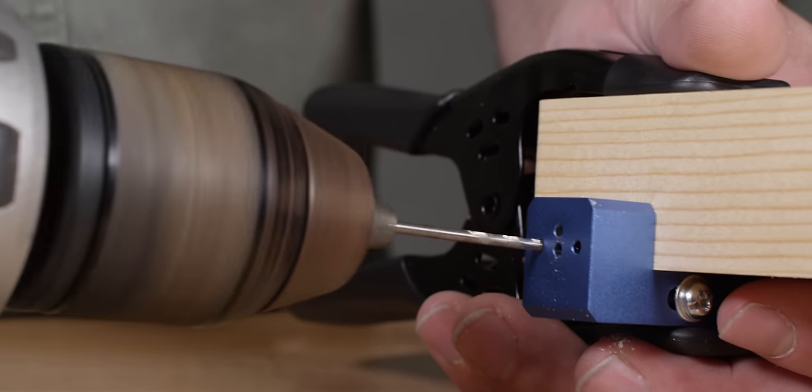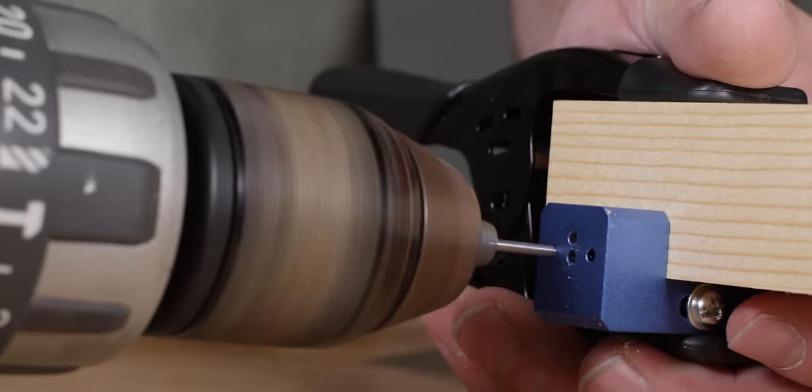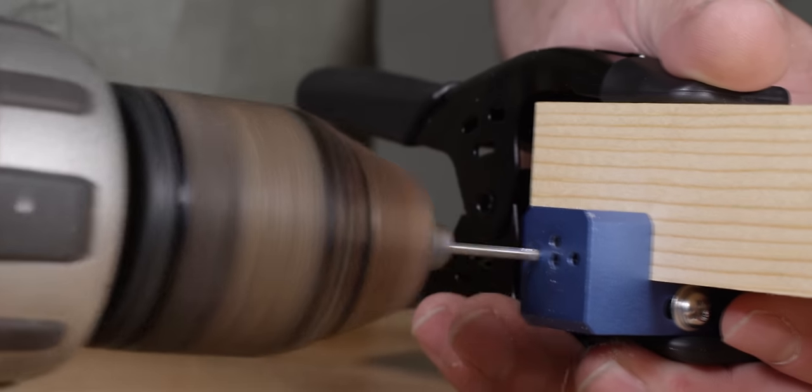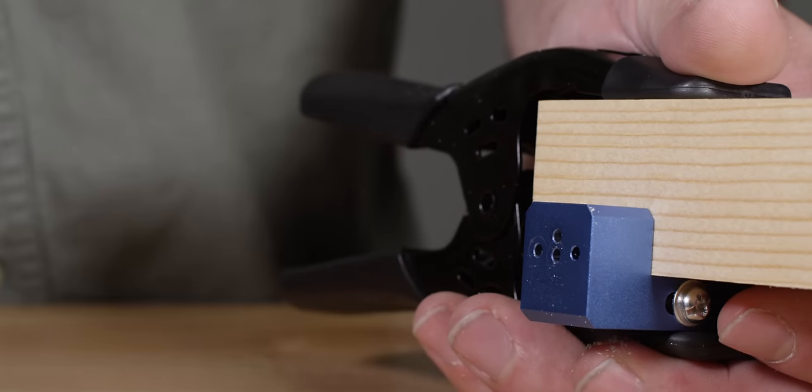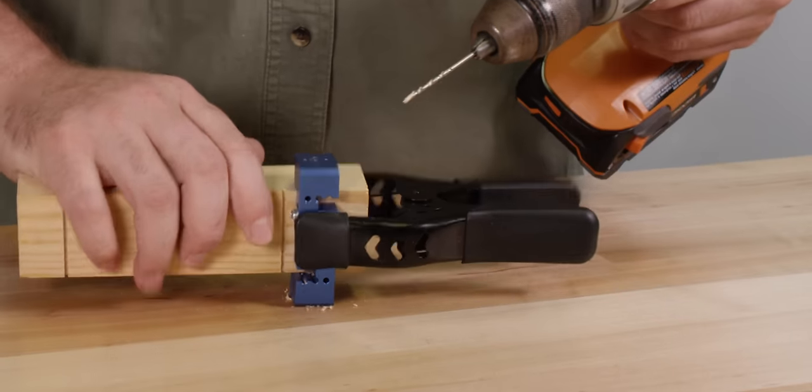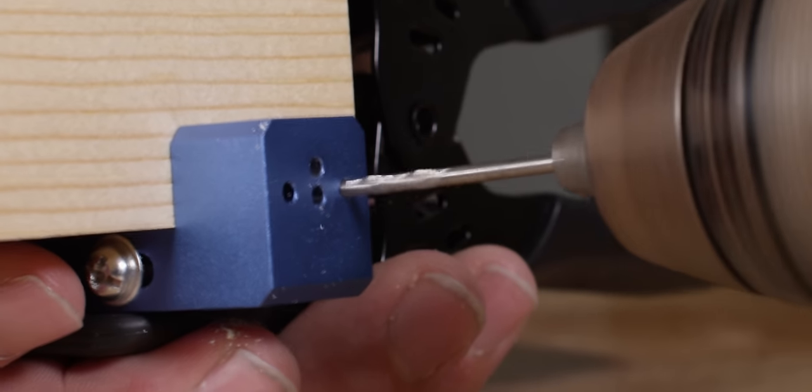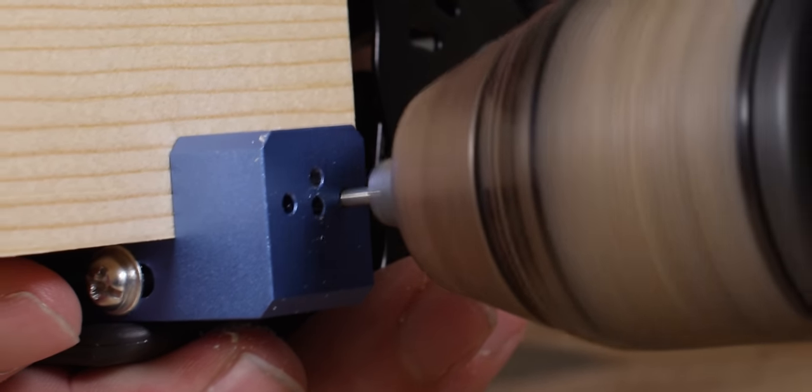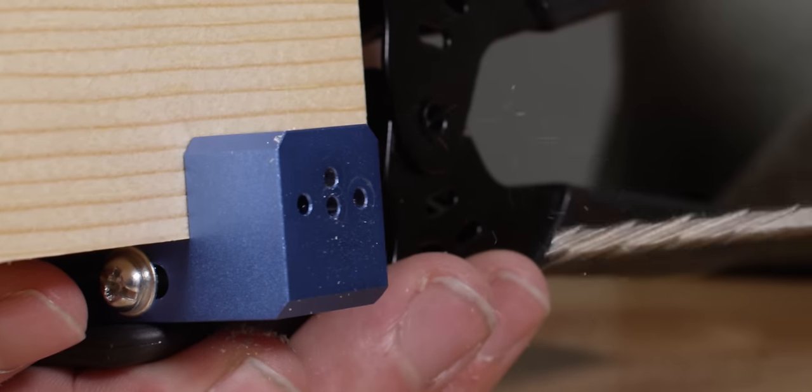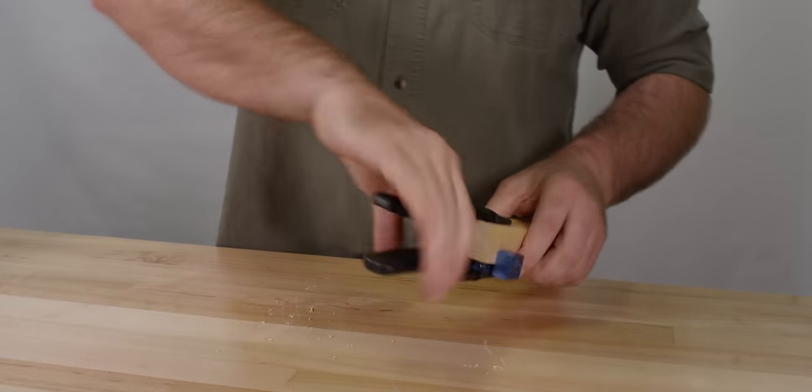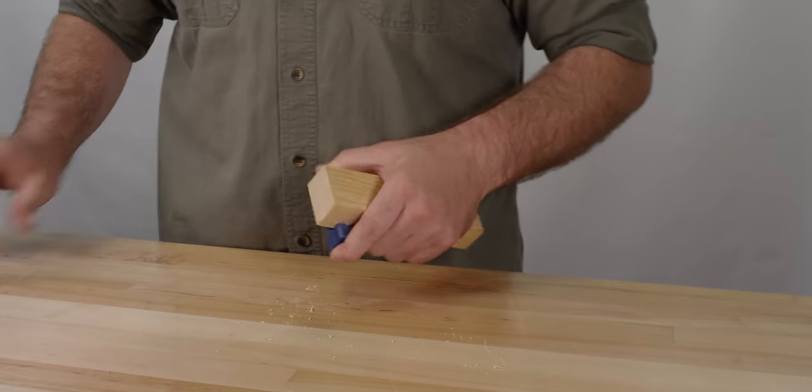We are now going to drill the first axle hole. When drilling, be sure to keep the drill bit straight and go in slowly. Turn the block to the other side to drill the other axle hole so the two holes are lined up across from each other. Remove the clamp and loosen the set screws and you're done.